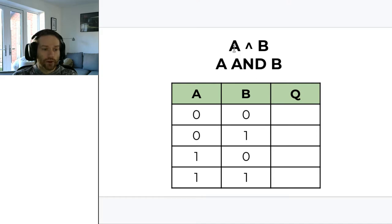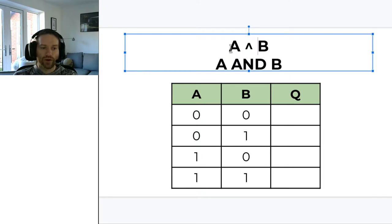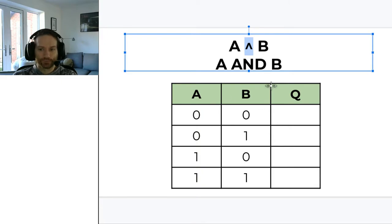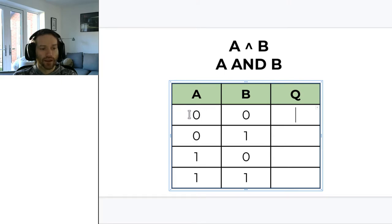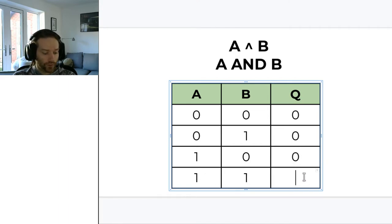As we go through these truth tables I'm going to introduce you to the symbols used in boolean equations. Instead of writing 'A AND B', we use a symbol that looks like an upside-down V — think of it as an A without a line across it, so when you see that symbol you think 'AND'. For the AND gate truth table: A=0 and B=0 gives output 0; A=0 and B=1 gives 0; A=1 and B=0 gives 0; and A=1 and B=1 gives output 1.